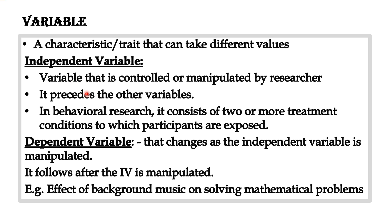The independent variable is the variable that is controlled or manipulated by the researcher. It precedes all other variables — the independent variable comes first and exists before the dependent variable. In behavioral research, it consists of two or more treatment conditions to which participants are exposed.